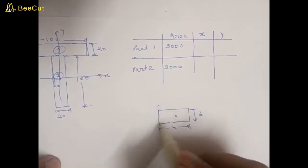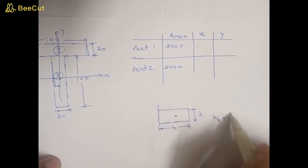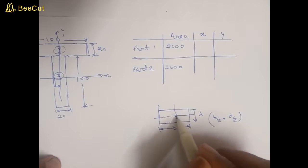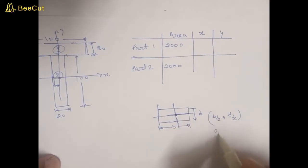Means in the middle of this section. And if we take centroid in the middle of this section, then its centroid will be zero and zero.